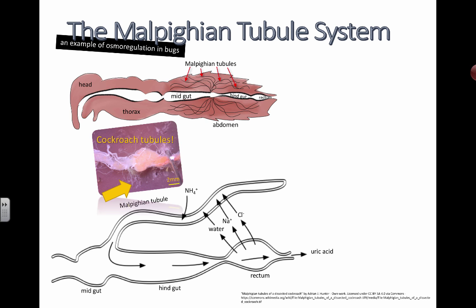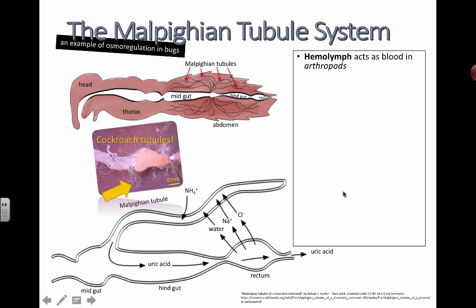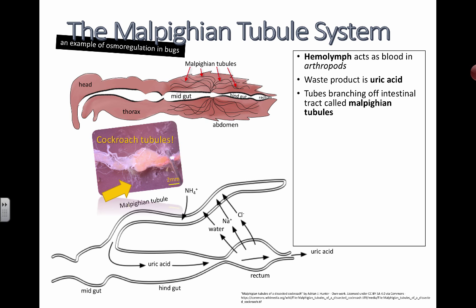Birds also use uric acid — it's a method to help prevent extra water loss. So hemolymph acts as blood in arthropods, and the waste product is uric acid. These branches coming off are called Malpighian tubules. Ions and uric acid are actively transported into the lumen of these tubules. Here you see ammonium ions coming in, getting converted to uric acid, and then the uric acid flows all the way out to be excreted along with all the food and stuff that needs to be pooped out.